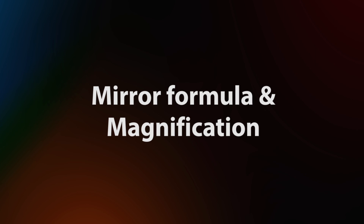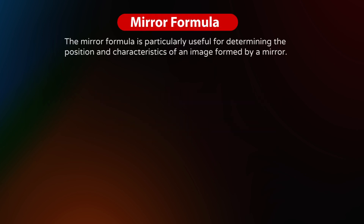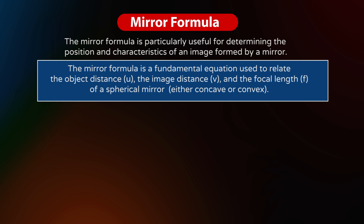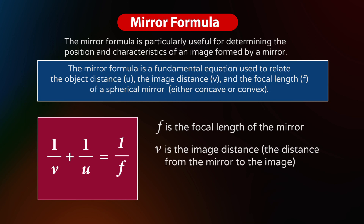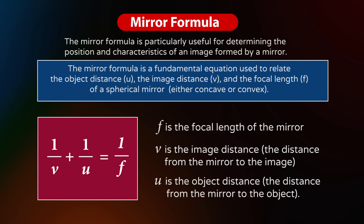Mirror Formula and Magnification: The mirror formula is particularly useful for determining the position and characteristics of an image formed by a mirror. It relates the object distance u, the image distance v, and the focal length f of a spherical mirror. It is expressed as 1/v + 1/u = 1/f, where f is the focal length, v is the image distance, and u is the object distance.